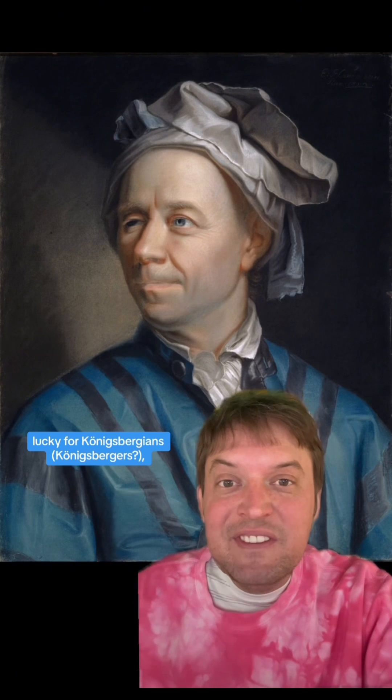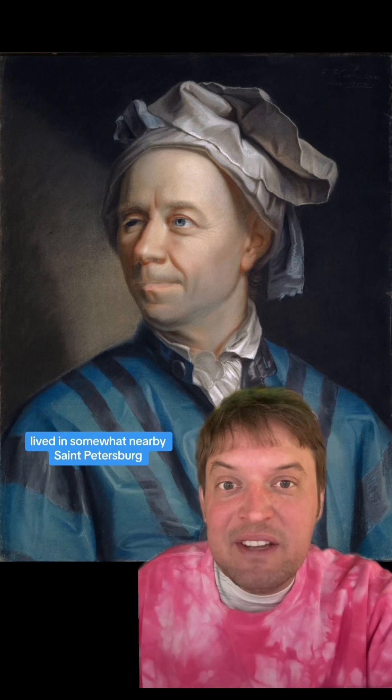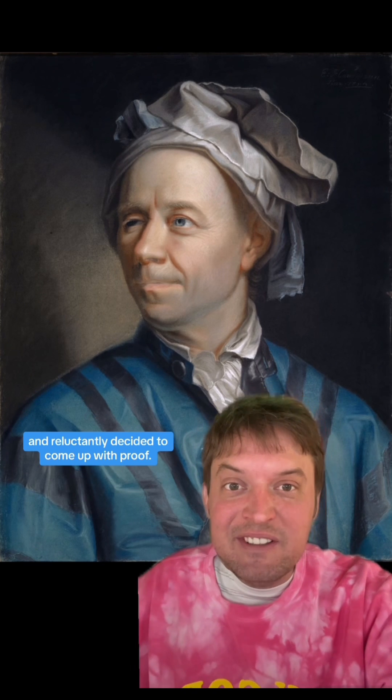Lucky for Konigsbergians, the famous 18th century mathematician Leonard Euler lived in somewhat nearby St. Petersburg and reluctantly decided to come up with proof.